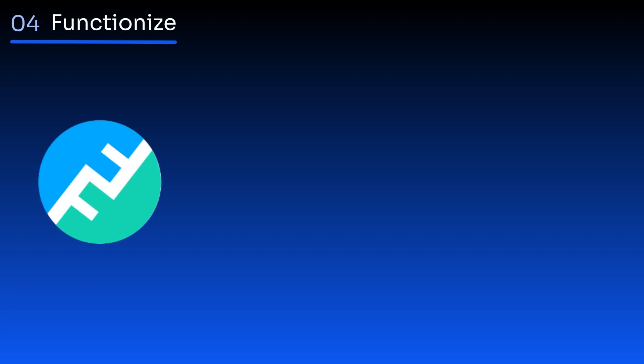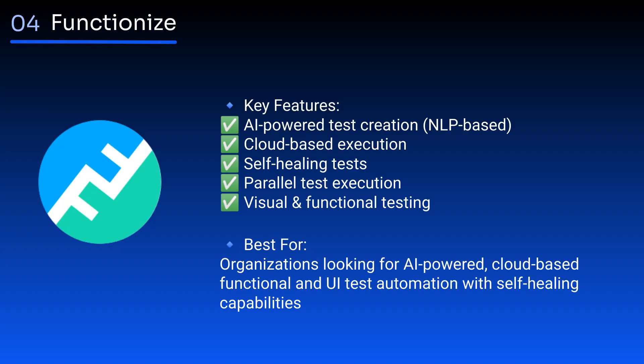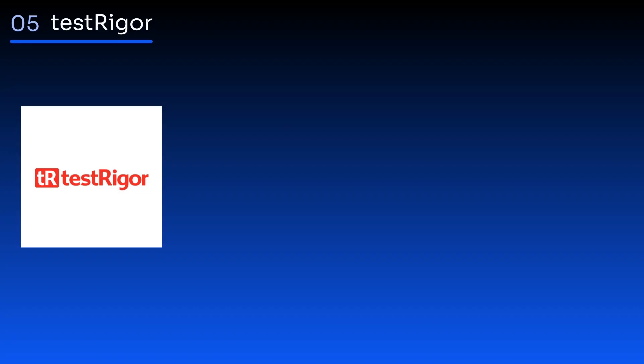Functionize is an AI-driven test automation platform that uses machine learning for test execution, self-healing, and natural language processing for test creation. Key features: AI-powered test creation, NLP-based cloud-based execution, self-healing tests, parallel test execution, visual and functional testing. Best for organizations looking for AI-powered, cloud-based functional and UI test automation with self-healing capabilities.